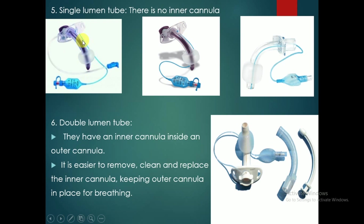Single lumen tube: in this tube there will be no inner cannula. These are the single lumen tubes with obturator — we can see the obturator also. This is a single lumen tube. Double lumen tube: this is the outer cannula, this is the inner cannula, and this is the obturator. A double lumen tube has an inner cannula inside the outer cannula. It is easier to remove, clean, and replace the inner cannula while keeping the outer cannula in place for breathing.